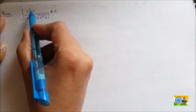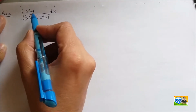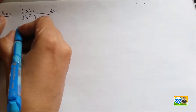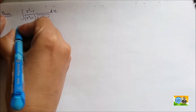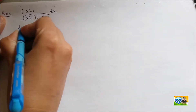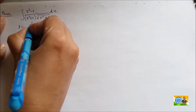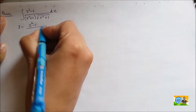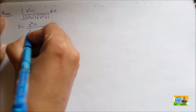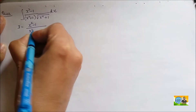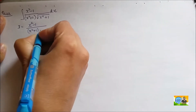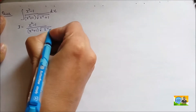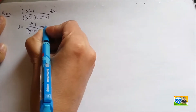Since this is a complex integral, let us simplify it first. So I equals the integral of (x² - 1) divided by (x² + 1), all under the square root of x⁴ + 1.